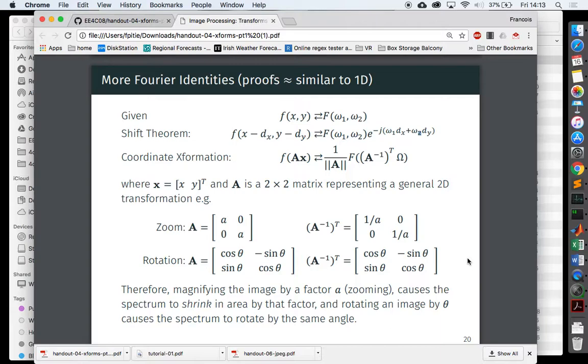So you—these are the transformations. So if you have a transformed version of your input coordinates, then you have the inverse transformation happening in the Fourier transform. That just comes from the maths, okay.